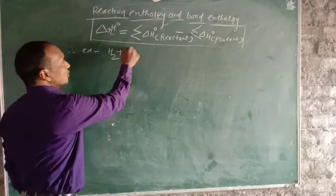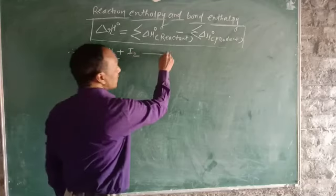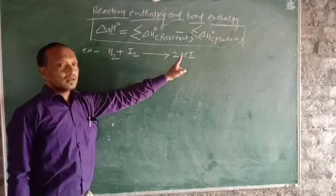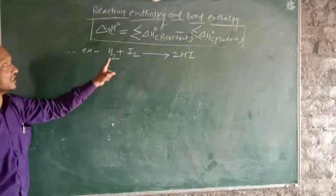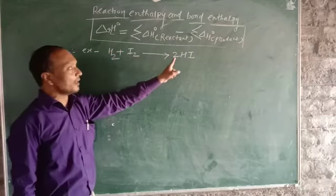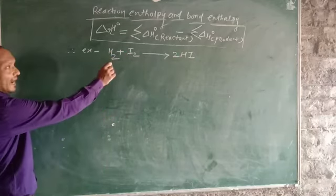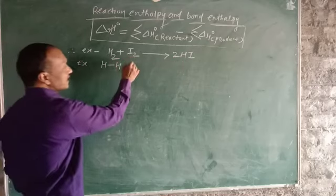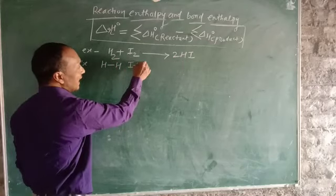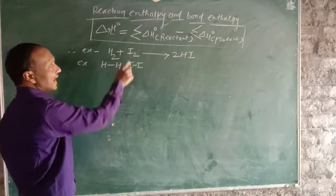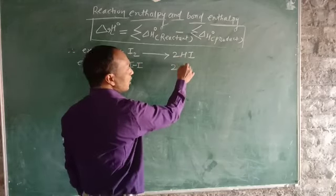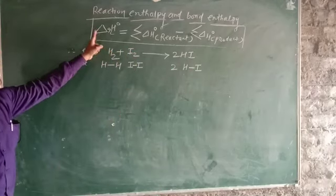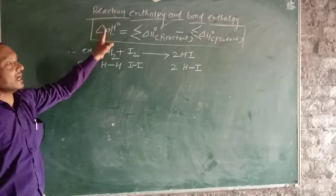For example, the formation of HI: H₂ + I₂ forms 2HI. Now in this reaction, if we write the bonds — H₂ is written as H–H bond, and I₂ is written as I–I bond. These are the important bonds in this reaction.